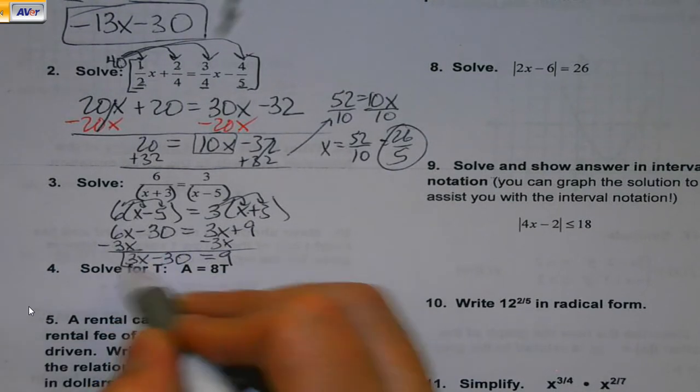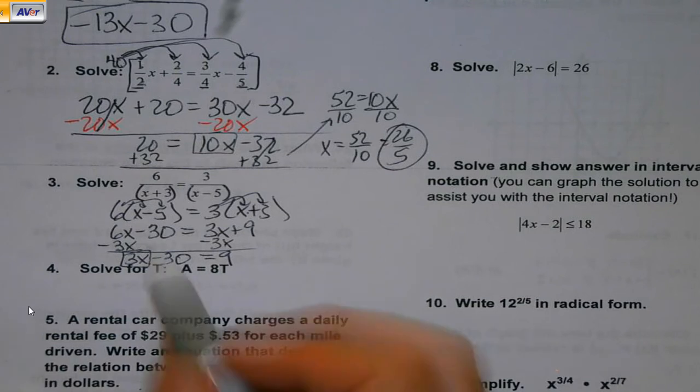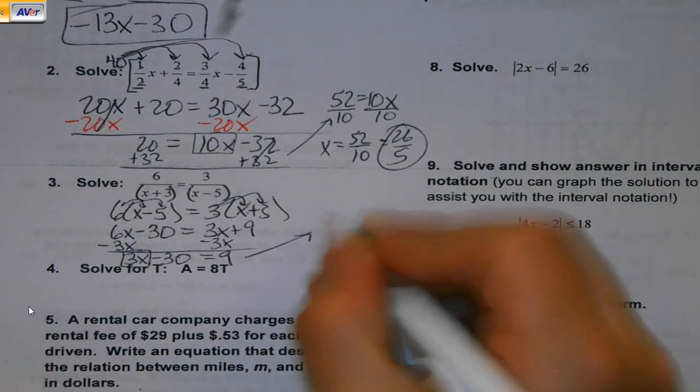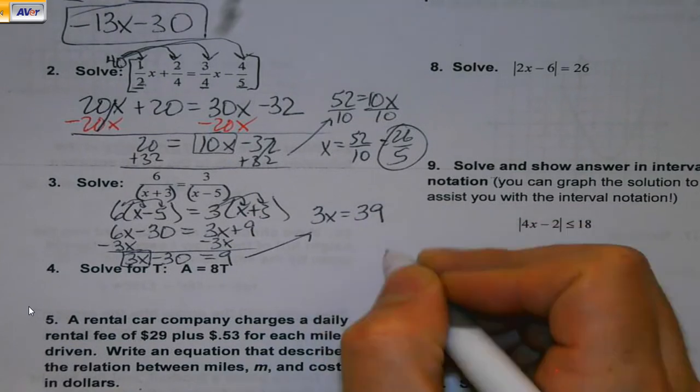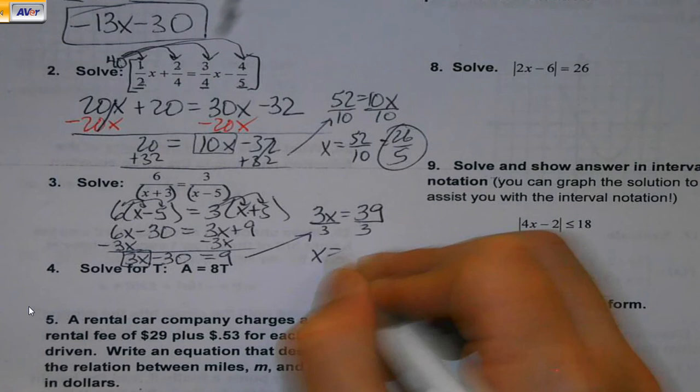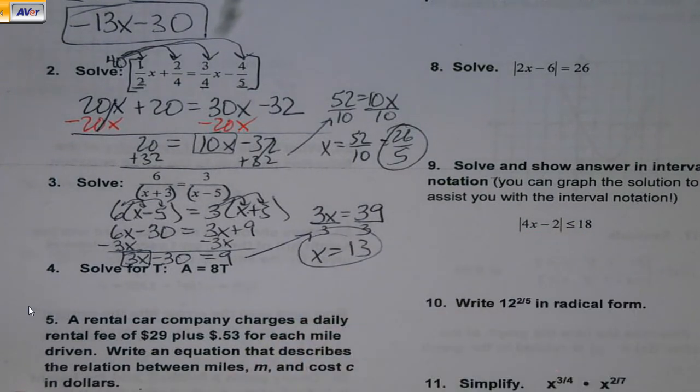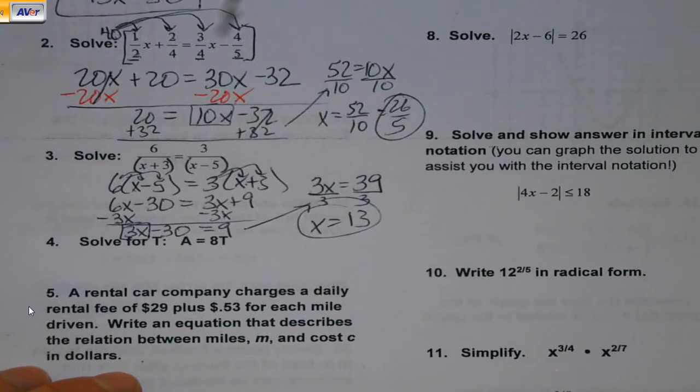And now it's a problem real similar to what we just got done with in number two. I want to get all my x's to one side. And again, if they're on opposite sides, I've got to do opposites. Once they're all together, new job. Get them alone. Opposite of minusing 30 would be two plus 30 to both sides. And then divide by three. So again, it's just your basic Algebra 1 skills being put to the test.